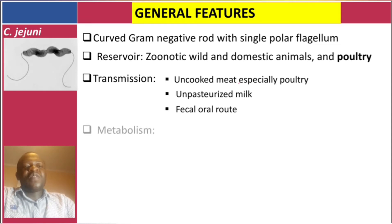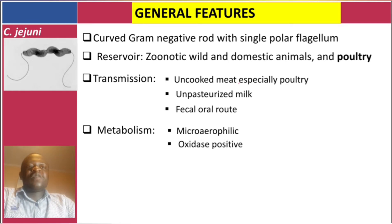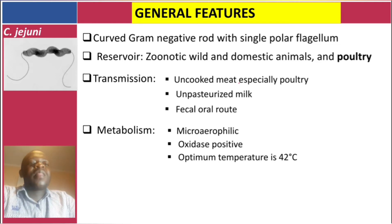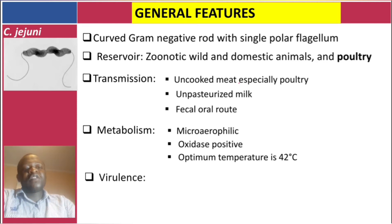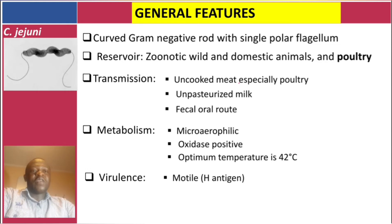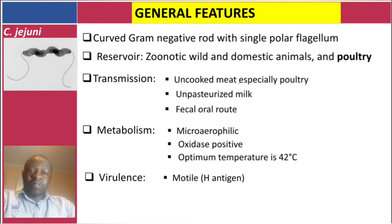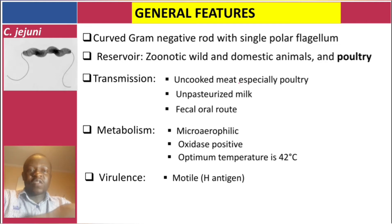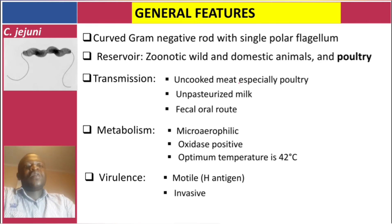Regarding metabolism, this bacteria is microaerophilic, oxidase positive, and its optimum temperature is 42 degrees Celsius. The virulence factors include the H antigen, since the bacteria is motile. Unlike cholera, Campylobacter jejuni is actually invasive — it gets inside the mucosa.